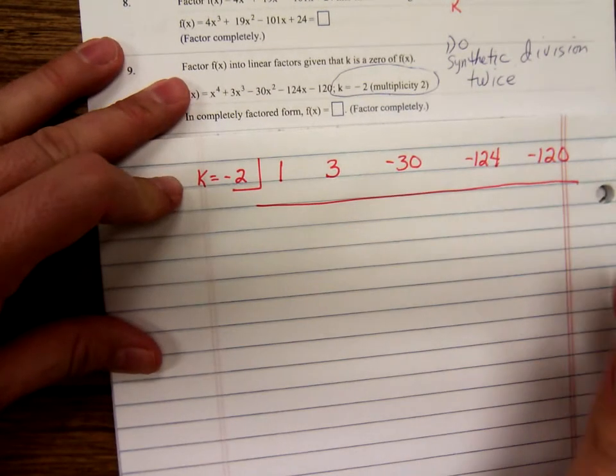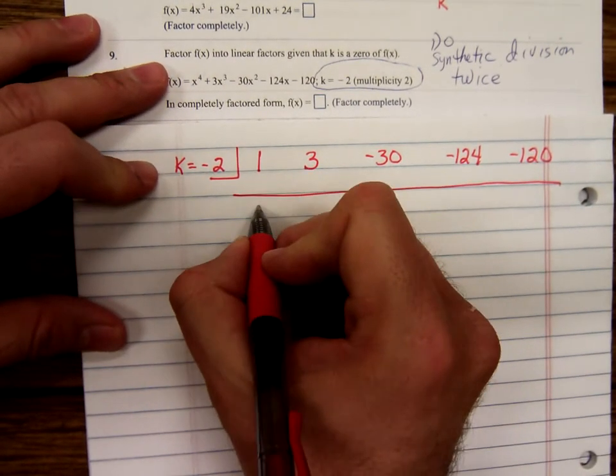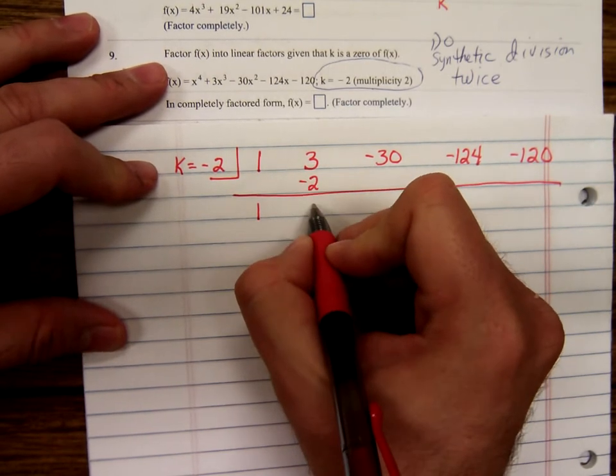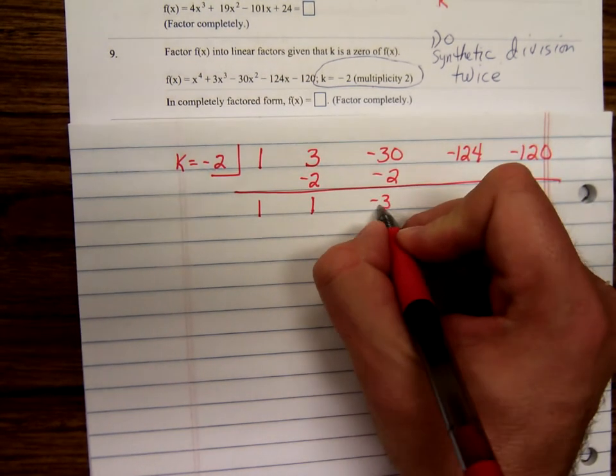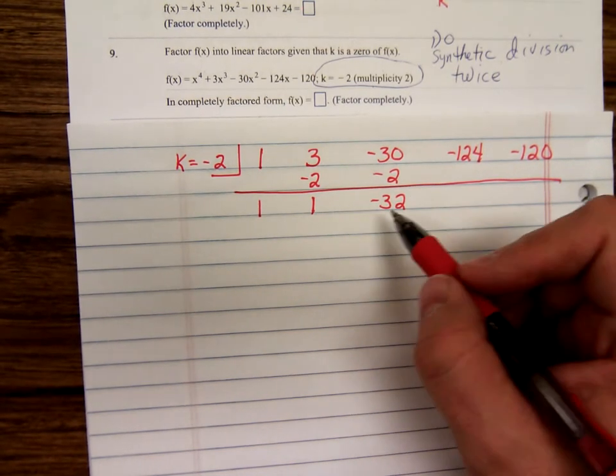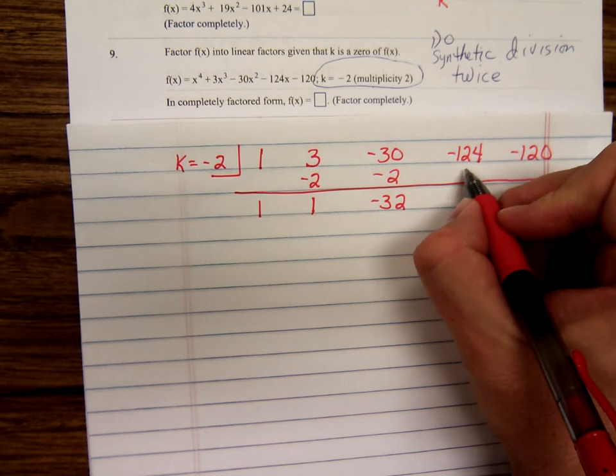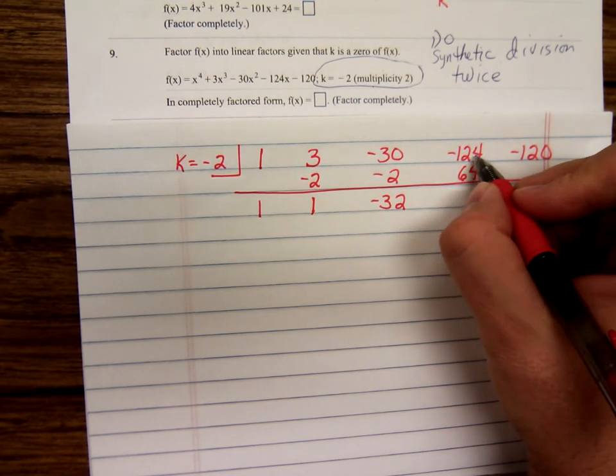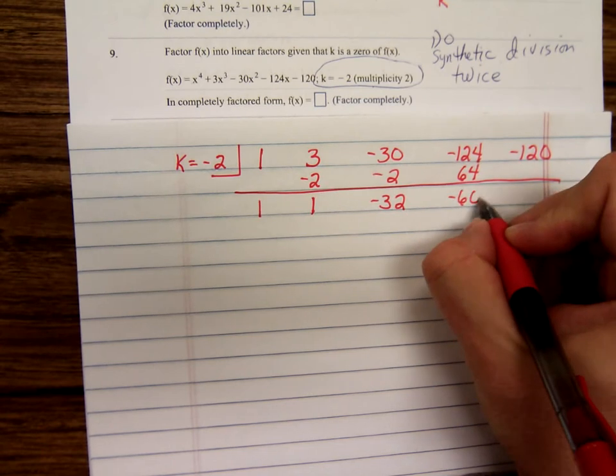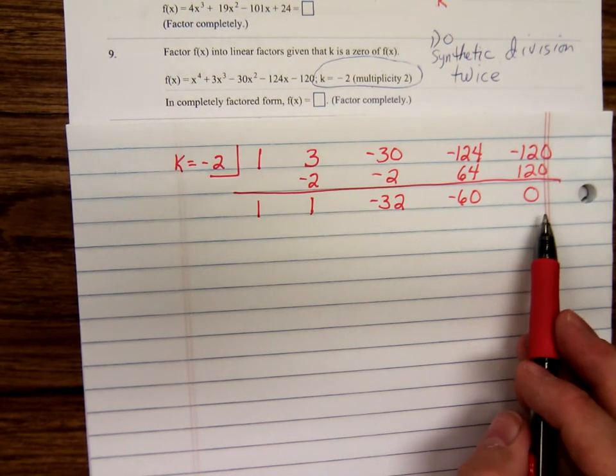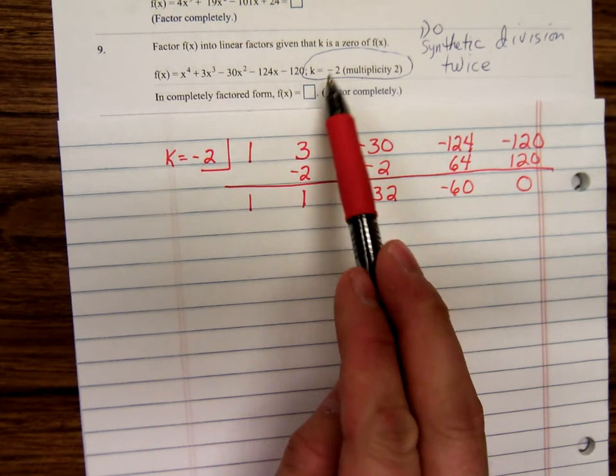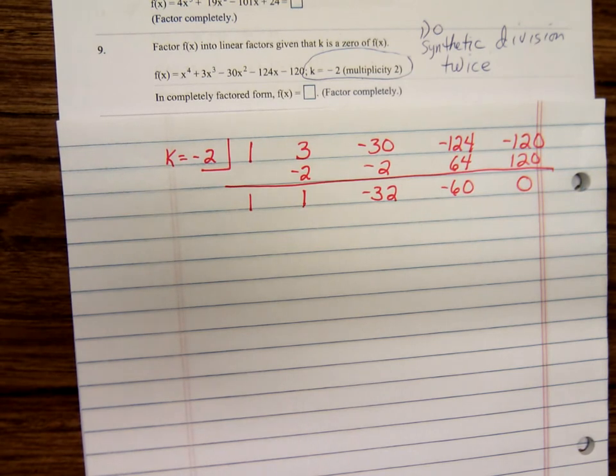Let me move this up a little. Carry down the one. One times negative two, negative two. Three minus two is one. One times negative two is negative two, negative three minus two, negative 32. Negative 32 times negative two is a positive 64. Negative 124 plus 64 is negative 60. Negative times negative positive. Notice, we've got a zero, which we should have expected because we're told that negative two was a zero.